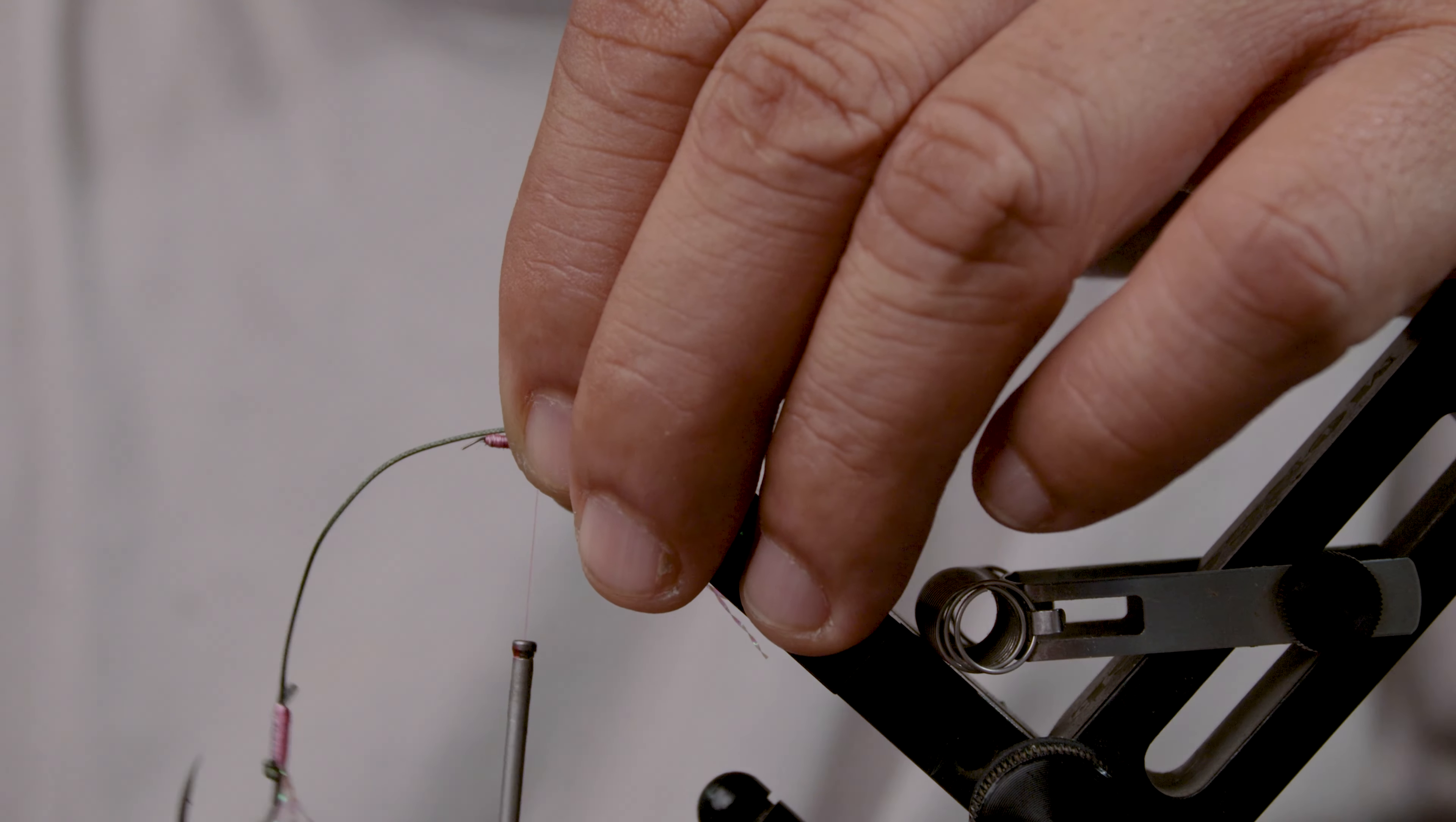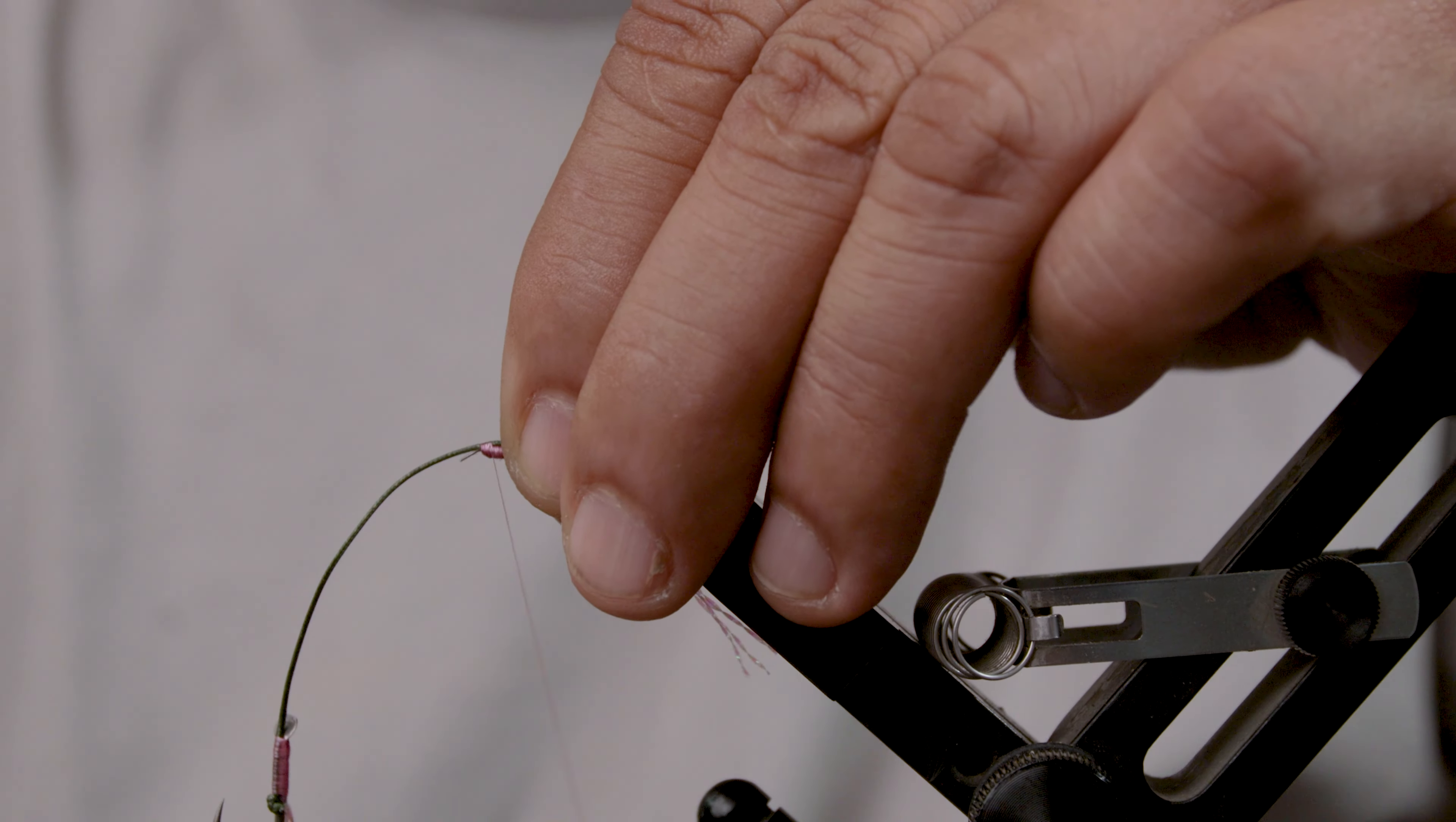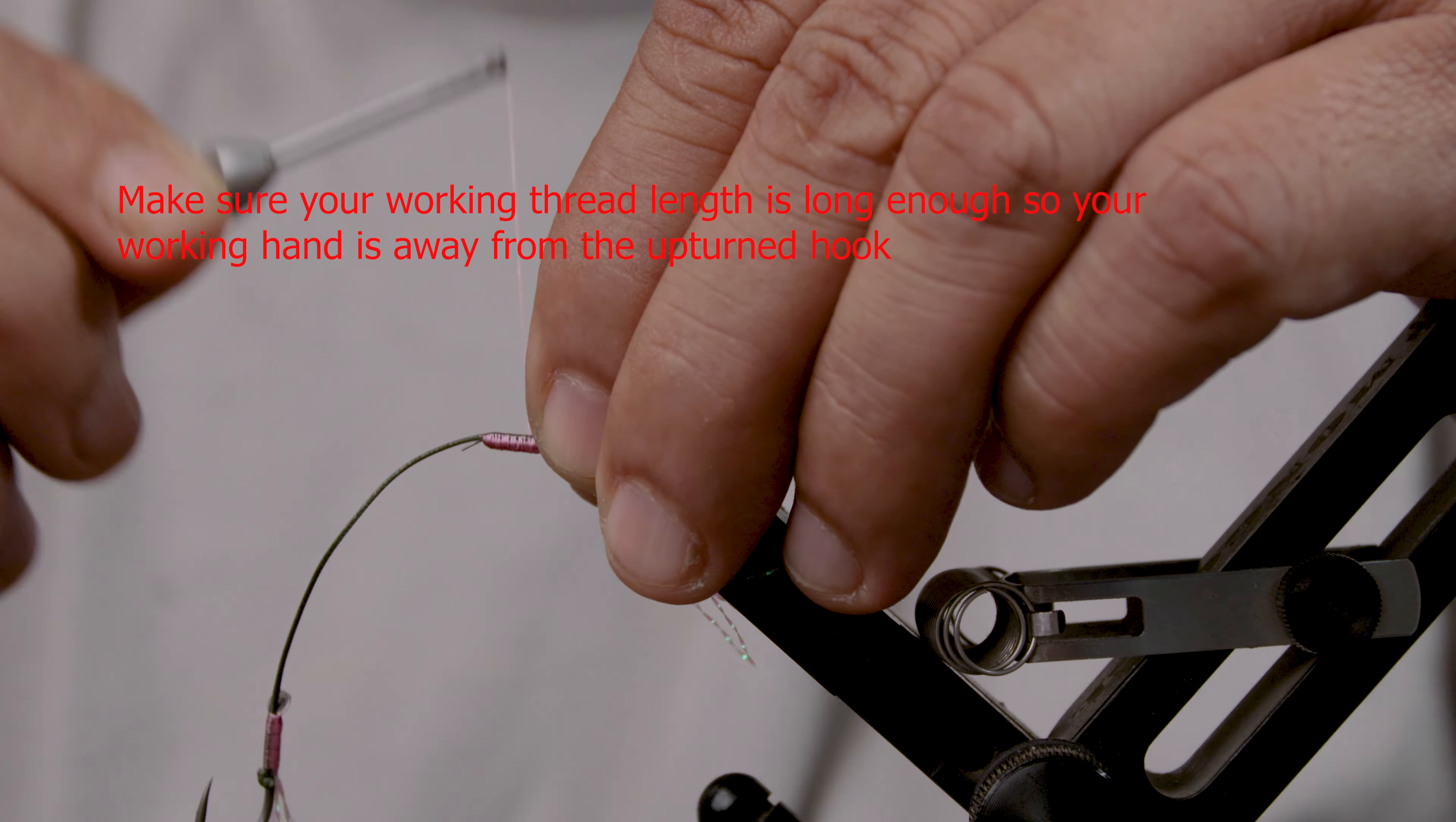Now one of the things that you should actually really consider when you're doing this type of method is having a rotary vise. Now I'm showing you guys how to do this without rotating it because I know a lot of people don't have rotary vises. But you have to be very careful, that is an upturned hook right there. You could easily get impaled, and especially with PTFE hooks, they just penetrate without you feeling any resistance.